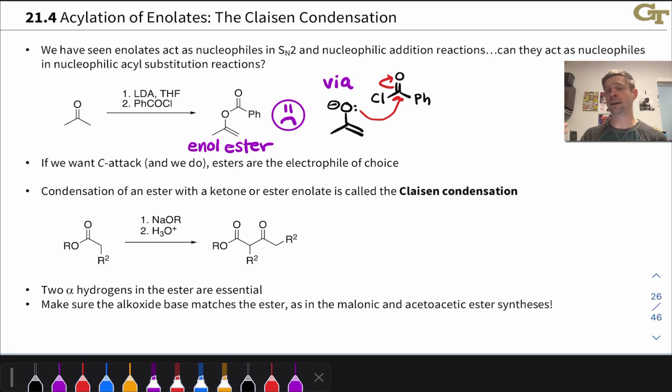On the enolate side, it's possible to use ketone enolates or ester enolates, but historically speaking, ester enolates were investigated first, and the condensation of an ester with a ketone or ester enolate is called the Claisen condensation in honor of Claisen, who heavily studied this reaction.